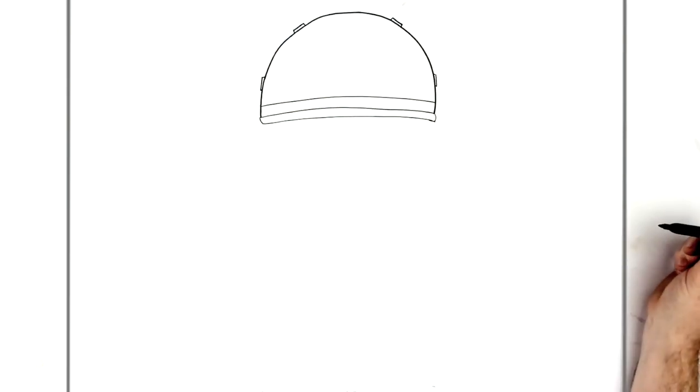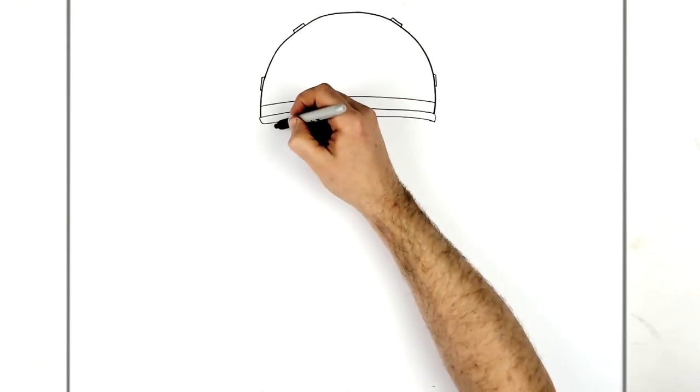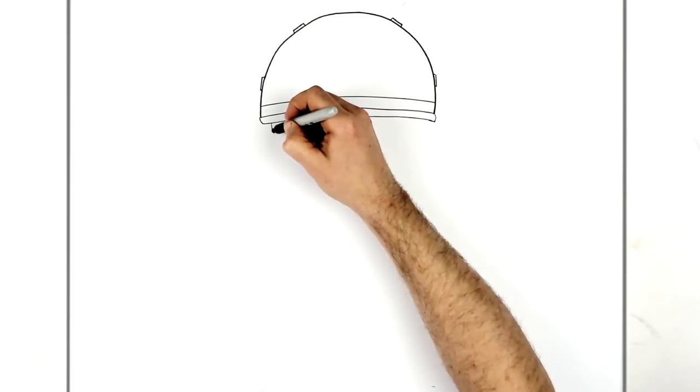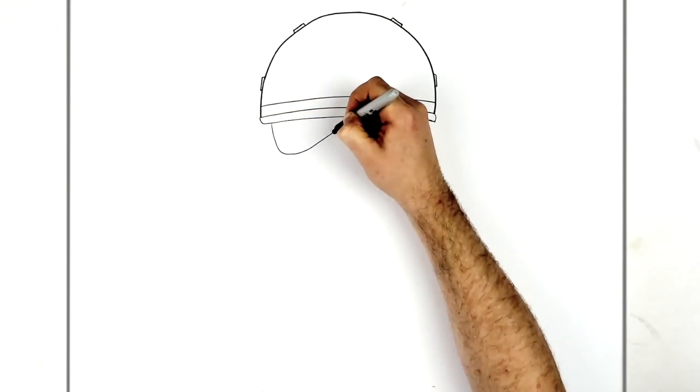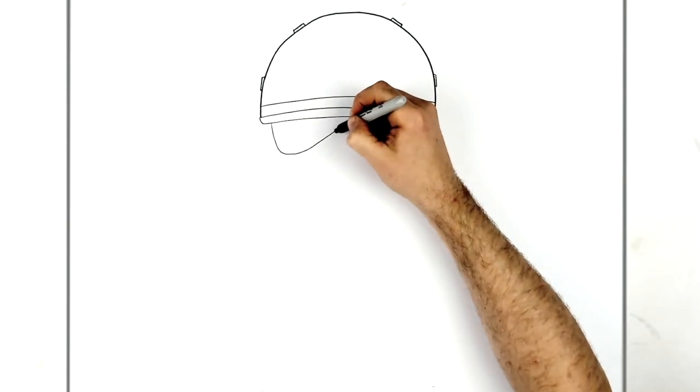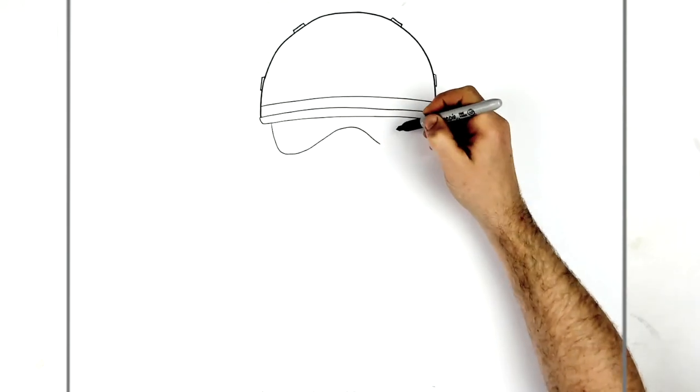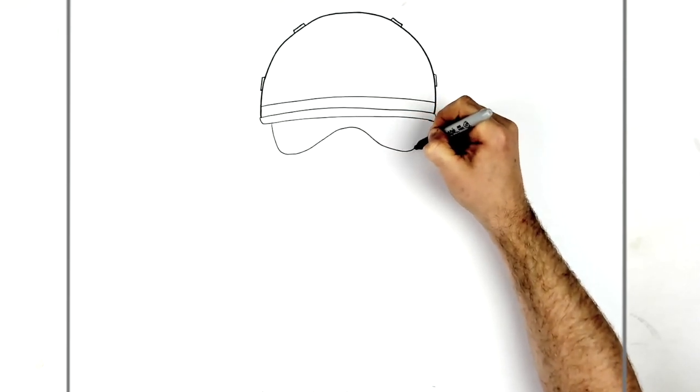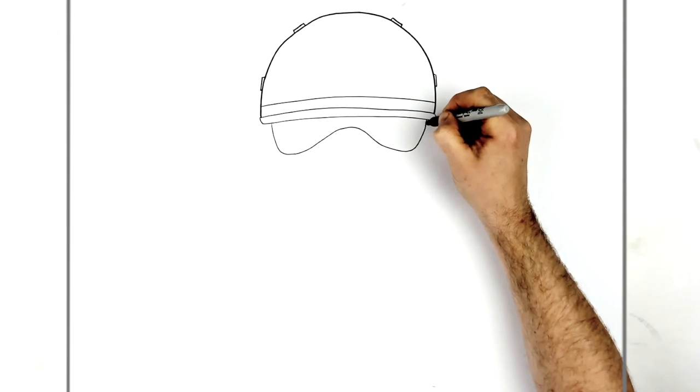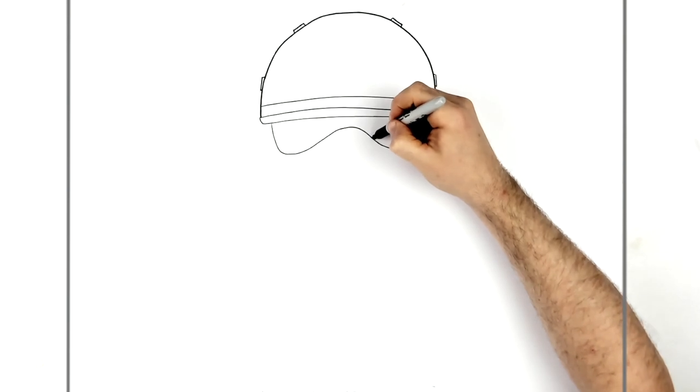Like so. So then the visor. Coming down from the black section, it curves, curves down, and up for his nose. And then it comes around the nose part, down, around again here.